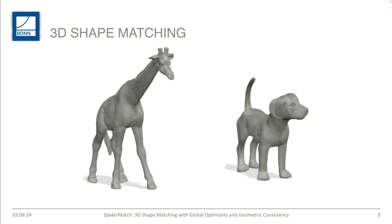In our work, we consider the task of 3D shape matching as finding correspondences between two non-rigidly deformed 3D shapes in the form of triangle meshes — for example, this giraffe and this dog. Correspondences means that we want to find for every vertex on the triangle mesh of the giraffe a corresponding vertex on the triangle mesh of the dog. This is quite intuitive for us humans to solve, but unfortunately it's very difficult to bake into an algorithm, especially when the smoothness of the matching should be very good.